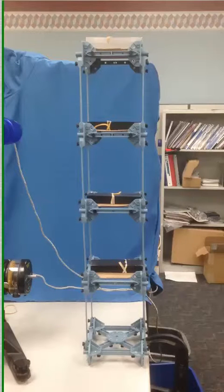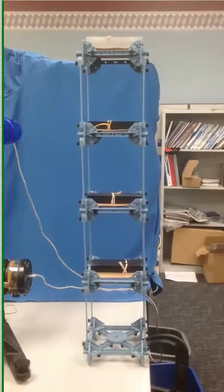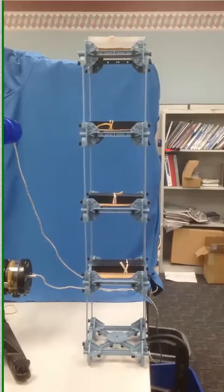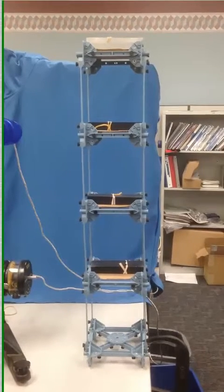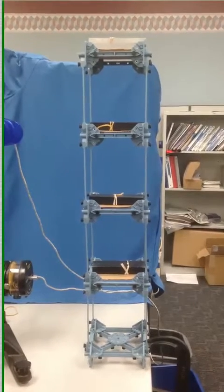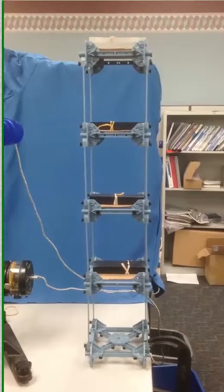So this shows the free vibration of the structure. It's had an initial displacement and is oscillating in its primary oscillatory mode. You'll see that the top of the tower is moving in the same direction as all the other parts of the structure at the same time.